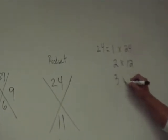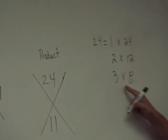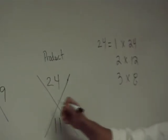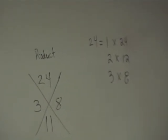Three. Three times eight. Do they add up to 11? Yes. Then you're done. You write the three and the eight, and now you have solved the x game.